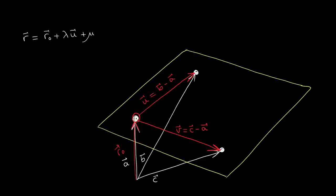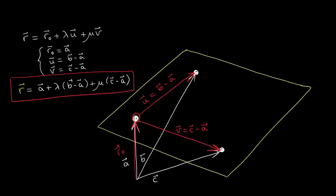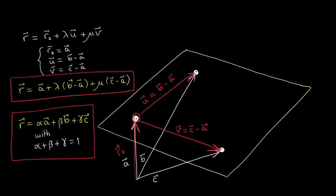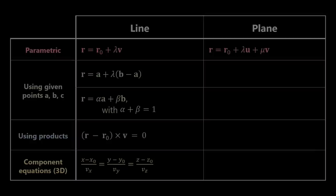So now we can write our parametric equation for a plane and substitute the values: r0 equals a, u equals b minus a, and v equals c minus a. We can also do some algebra and rewrite, renaming the parameters so that we arrive at r equals alpha a plus beta b plus gamma c, with the condition that alpha plus beta plus gamma equals one. This notation is nice because it puts the vectors a, b, and c on equal grounds. Let's add these two equations into our table.